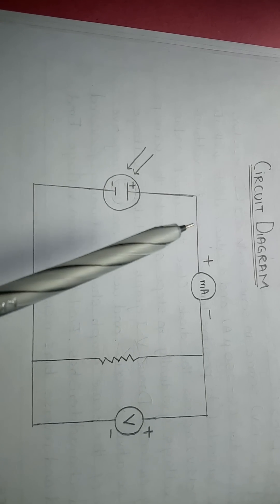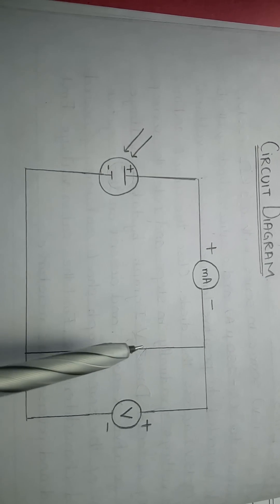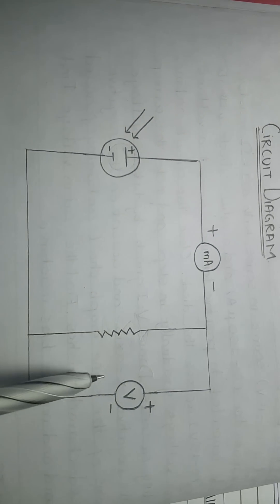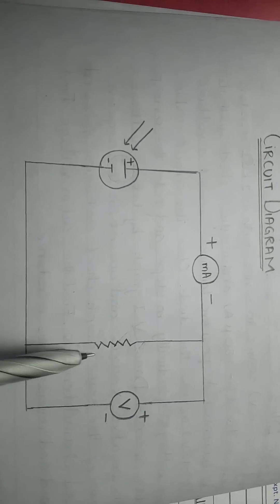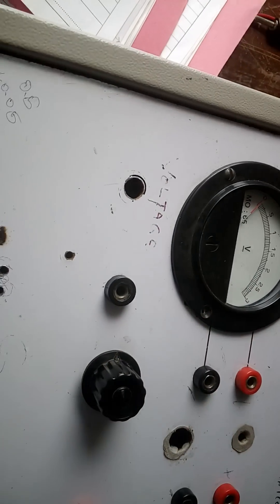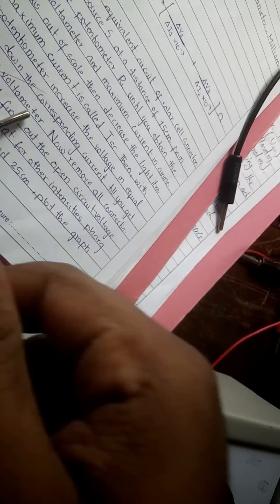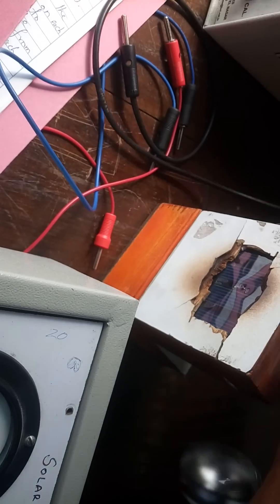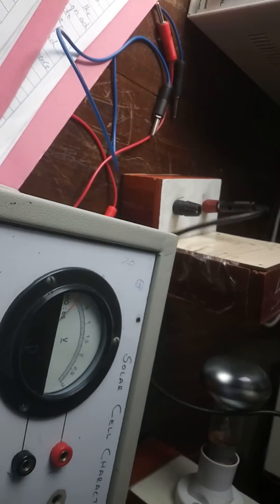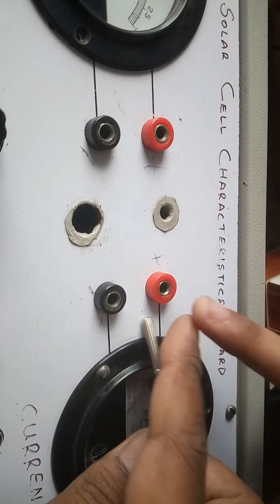The connection goes from the positive of the solar cell to the ammeter positive, then from ammeter negative to the resistance, and from resistance back to the solar cell negative. This is a series connection. The voltmeter is connected in parallel with the resistance.